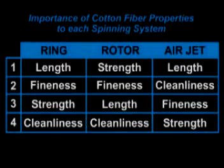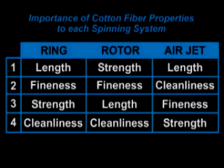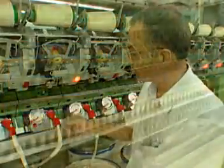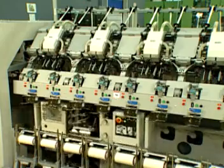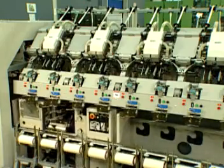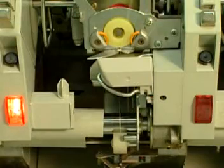As is evidenced by the adjoining table, specific fiber properties vary in their importance according to the spinning system employed. These differences in importance are due to the mechanical design of the particular spinning system and the physics involved. Ranking these properties in no way means that the lowest ranked property is not to be considered — it simply displays the importance of the individual fiber properties for good spinning performance.